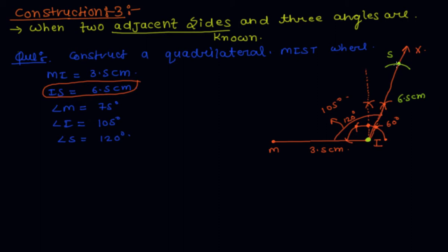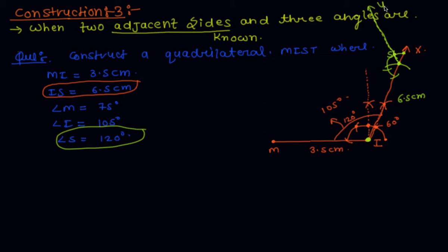At point S, we draw angle S equal to 120 degrees. To draw 120 degrees, draw a circle and three arcs of the same radius. This point corresponds to 120 degrees. Meet this point with S; this ray is taken as SY.